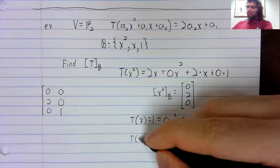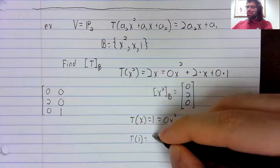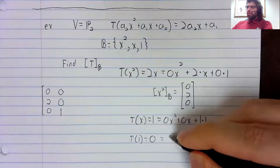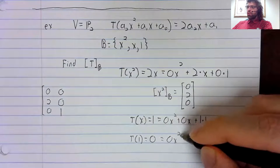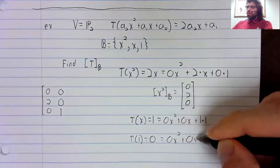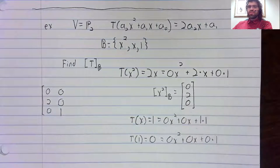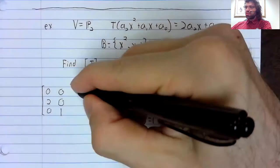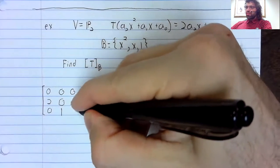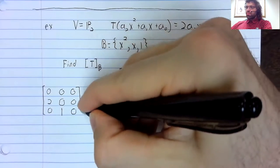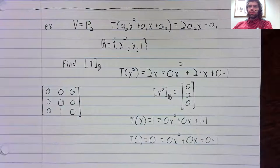And now we'll apply this transformation to one. And we'll get zero, which in terms of these basis elements is zero, zero, zero.